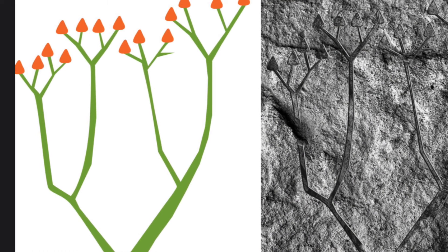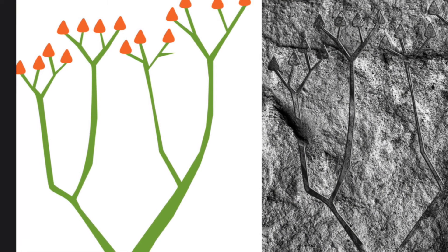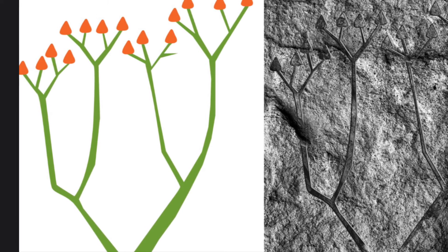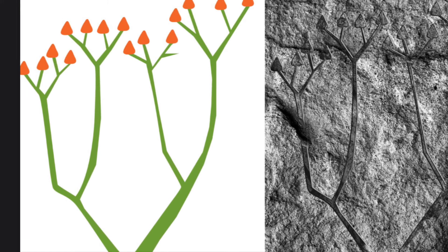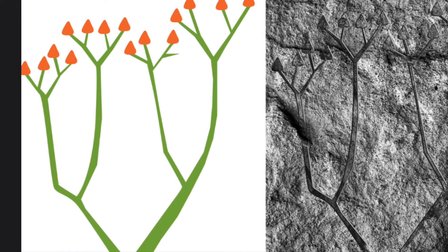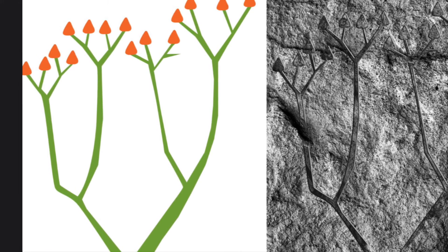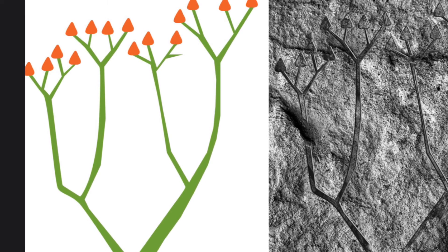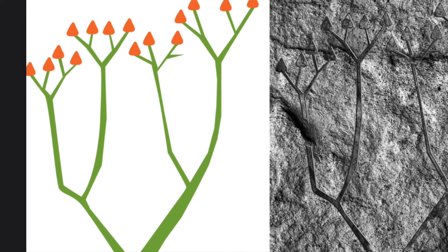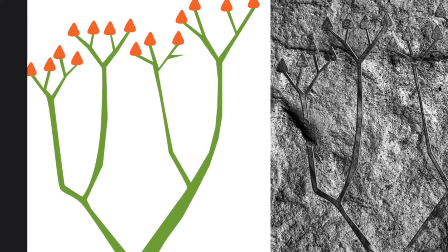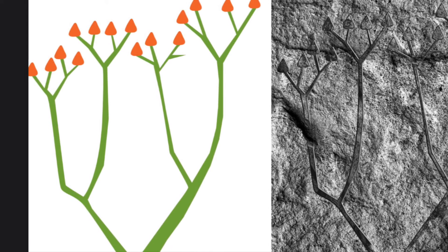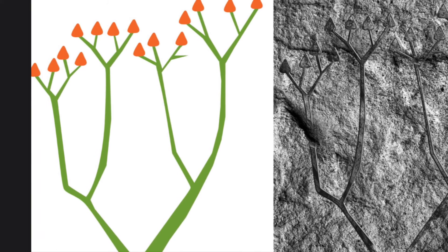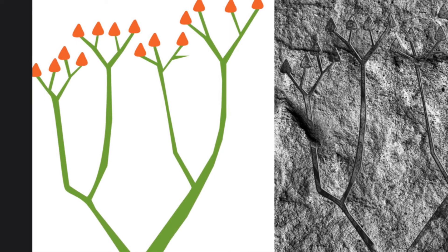The fossil record estimates that the first plants appeared on land about the same time. Back then, there was no soil on the land because soil contains dead, decaying plants. Since these were the first plants on land, no plants had yet died in order to create soil. The first plants did not have the same characteristics as plants today. These plants were less than a half an inch tall, and they had no roots, leaves, flowers, or seeds, but they were plants nevertheless.